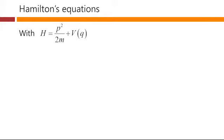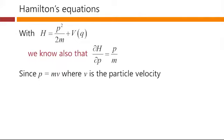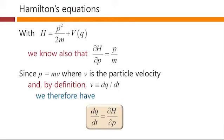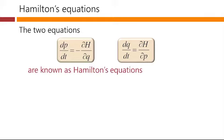Again, with our classical Hamiltonian p squared over 2m plus V of q, the partial derivative of the Hamiltonian with respect to p is just p over m. This term does not depend on p. Since p equals mass times velocity in classical mechanics, and by definition velocity is the rate of change of position, then the rate of change of position dq/dt equals dH/dp, because p over m is just velocity. These two equations — dp/dt equals minus partial dH/dq, and dq/dt equals partial dH/dp — are known as Hamilton's equations.